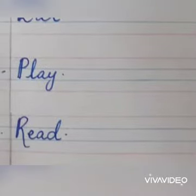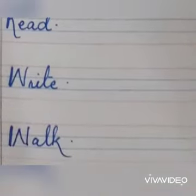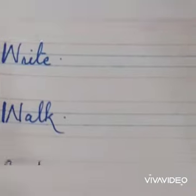Number five: Play — Play ke kya mahinye hote hain? Khelna. Number six: Read — Read ke kya mahinye hote hain? Parhna. Number seven: Write — Write ke kya mahinye hote hain? Likhna. Number eight: Walk — Walk ke kya mahinye hote hain? Chalna.